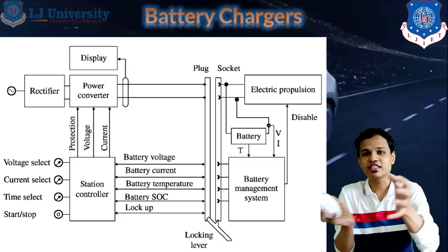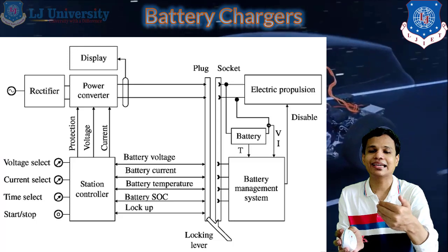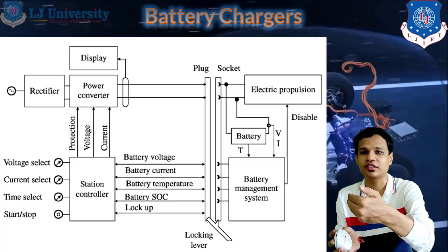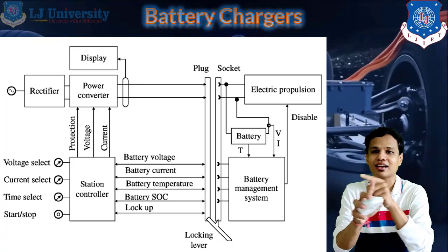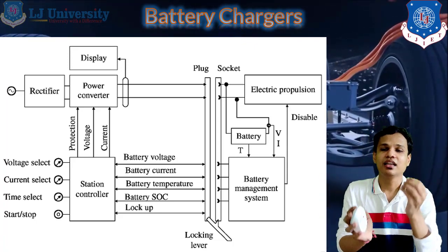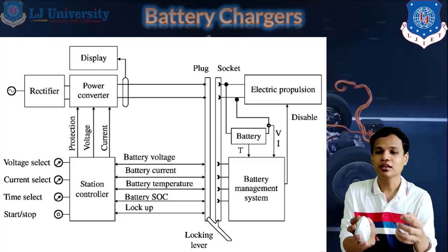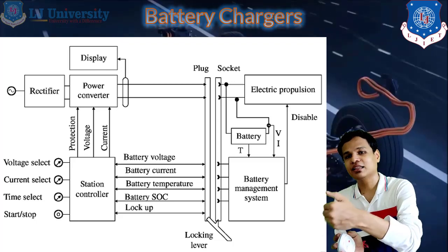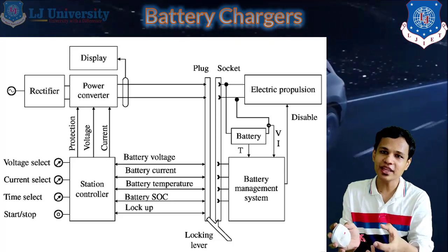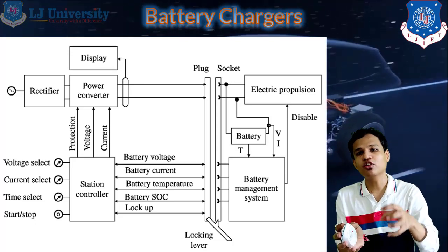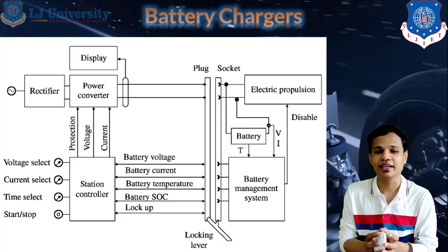The readings being monitored include battery voltage, battery current, battery temperature, battery SOC (state of charge), and the lock-off signal. All these parameters are connected bi-directionally between the station controller at the off-board side and the battery management system. These two are interconnected, and from those sensed values, the amount of current is controlled for the charging of our battery.